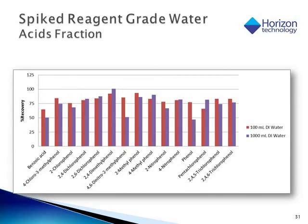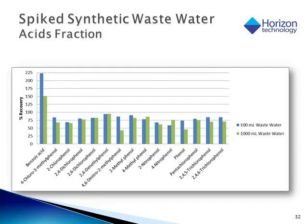Shown are the recoveries for acids in reagent water and in synthetic wastewater spiked with a test mix, with 100-milliliter and 1-liter sample recoveries shown side by side. Benzoic acid recoveries were found to be high; however, benzoic acid recoveries are GC-MS dependent and generally not a reflection of the SPE process. To best analyze these acids is through esterification of these compounds prior to analysis.